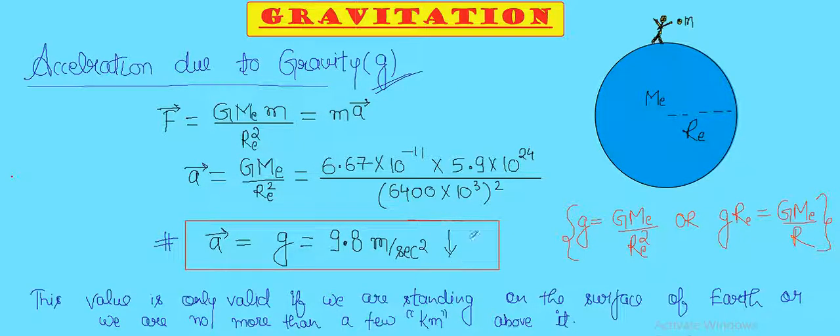Suppose this is me standing on the surface of the earth and this is a small mass m that I have released just from my hands. We all know that this small mass m will fall in the downward direction.